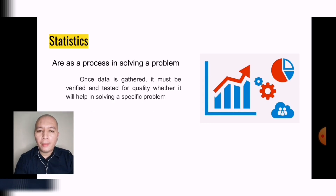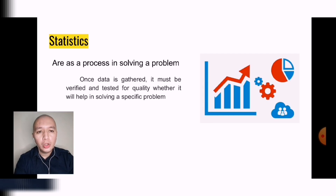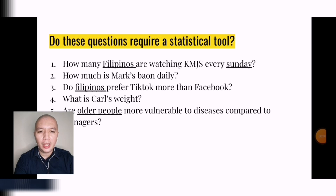Apart from being used as a decision-making tool, statistics is also used as a problem-solving tool. Once data is gathered, it must be verified and tested for quality to determine whether it will help in solving a specific problem. Statistics is used for making decisions — specifically, the decision to solve a particular problem. This series of questions will give us an idea of whether a statement or question requires a specific statistical tool.